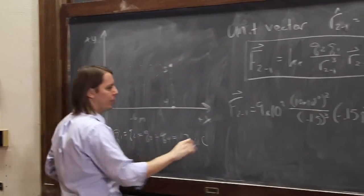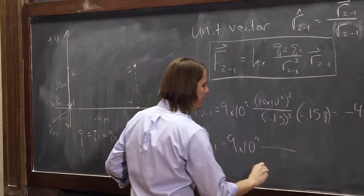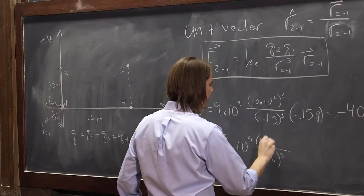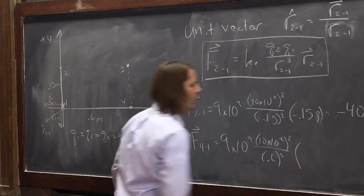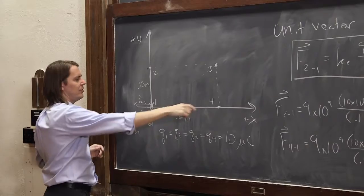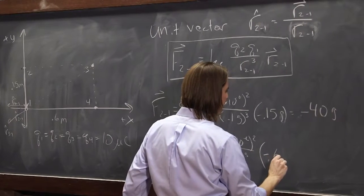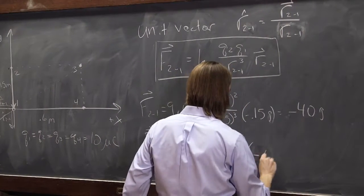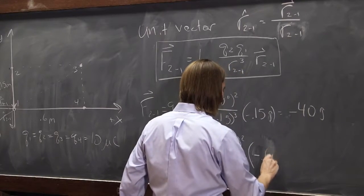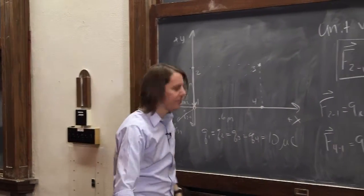And then we could also do f 4,1. And it's the same thing, 9 times 10 to the 9 over 0.6 cubed times, you know, on the top we have 10 times 10 to the minus 6 squared. And then we just write the vector r 4,1. Well, that's minus 0.6 because it's this way, i hat direction. And that'll give you the same answer for that component, minus 2.5 in the i hat.